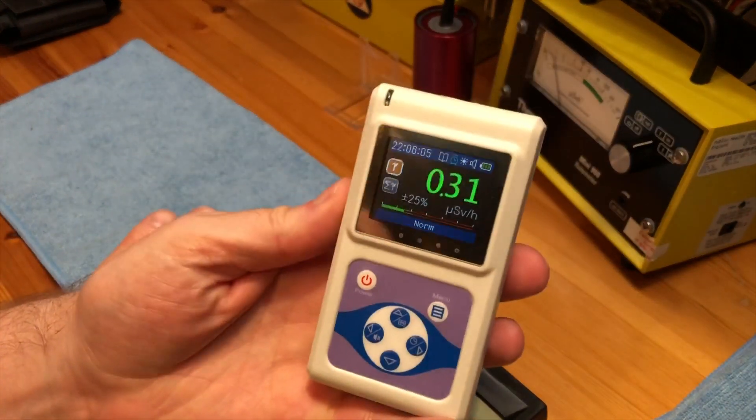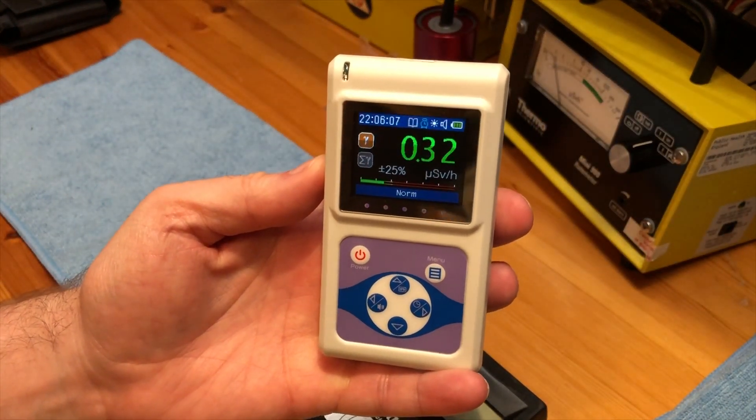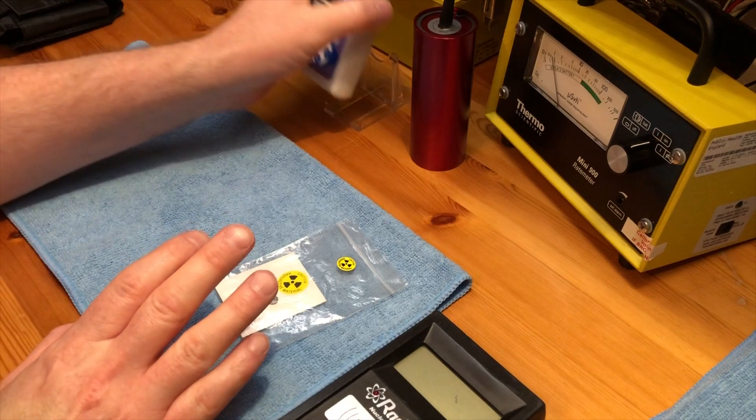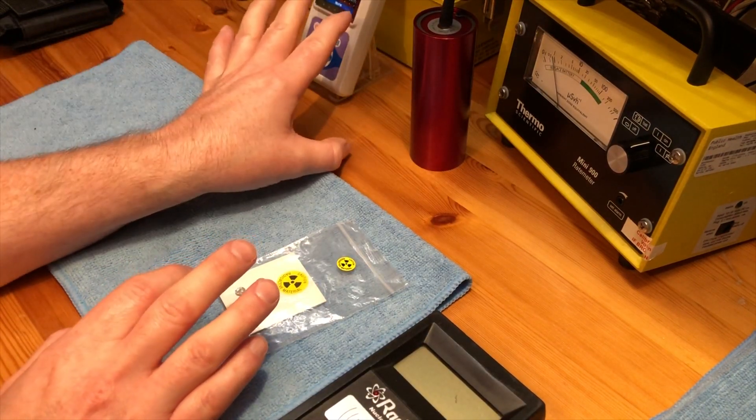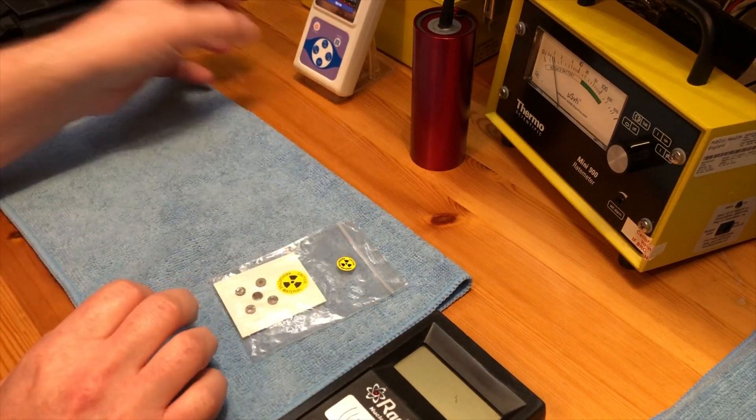The background radiation at the moment in the shed is between 0.30 and 0.31. It spiked up there because I put the americium over it a little bit.